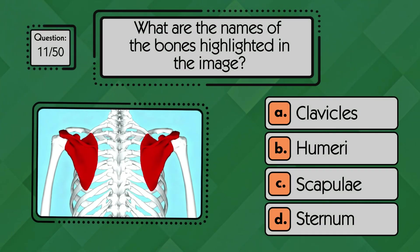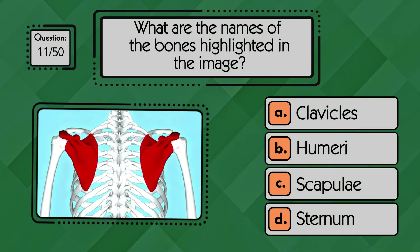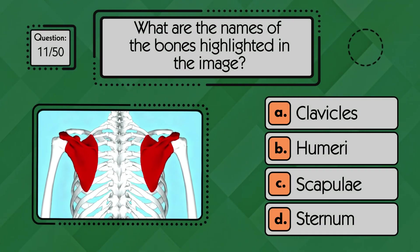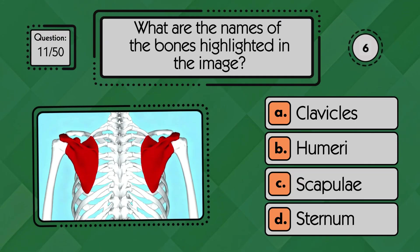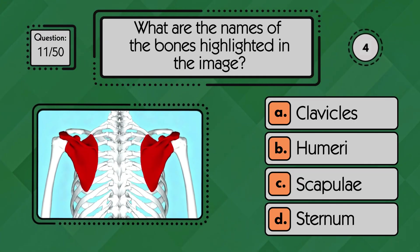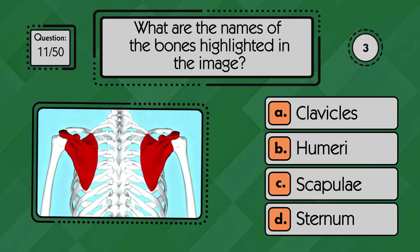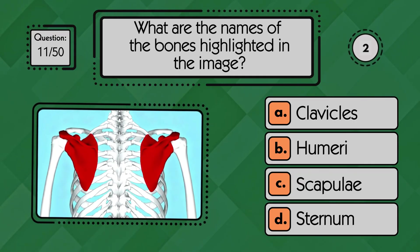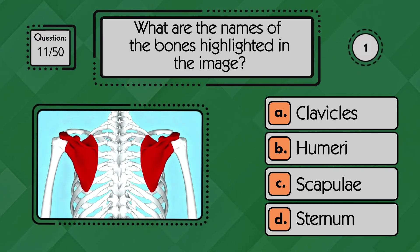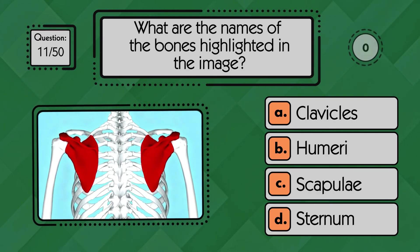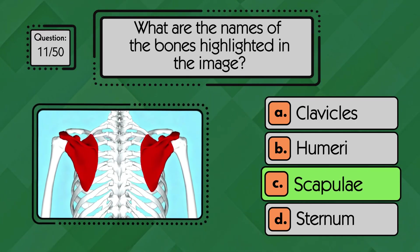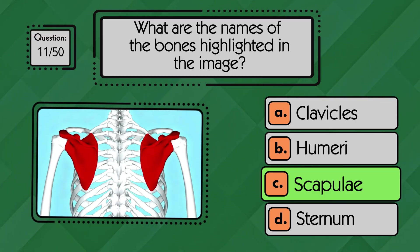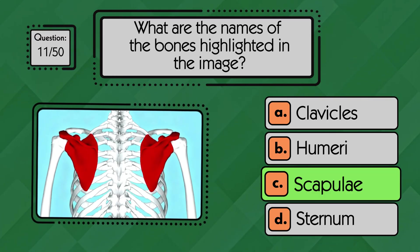What are the names of the bones highlighted in the image? The bones highlighted in the image are the scapulae, also known as the shoulder blades.